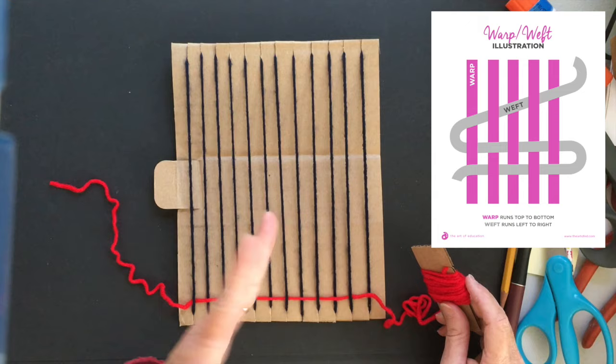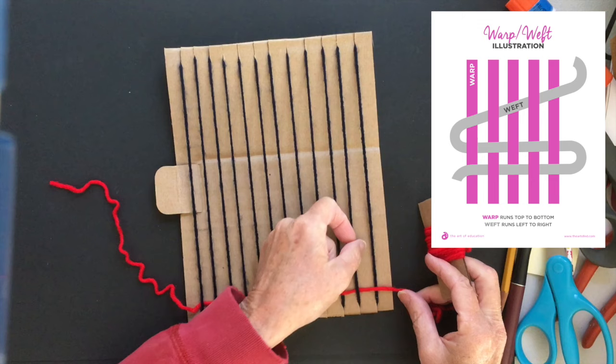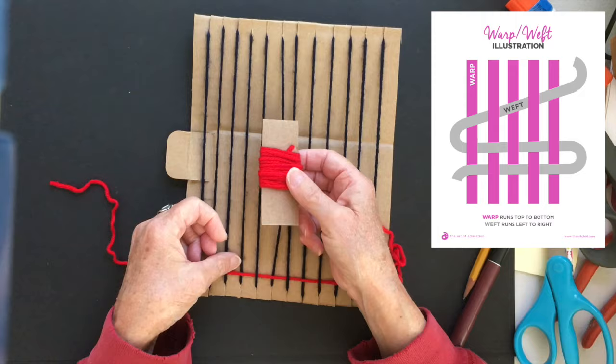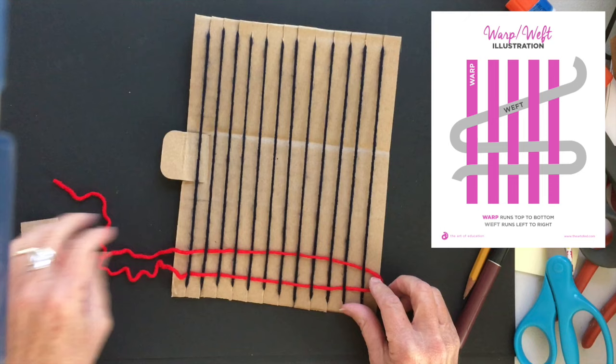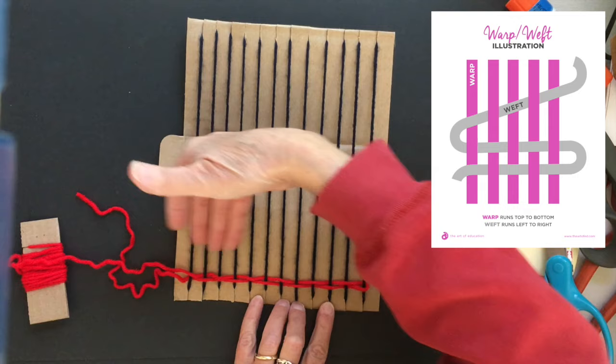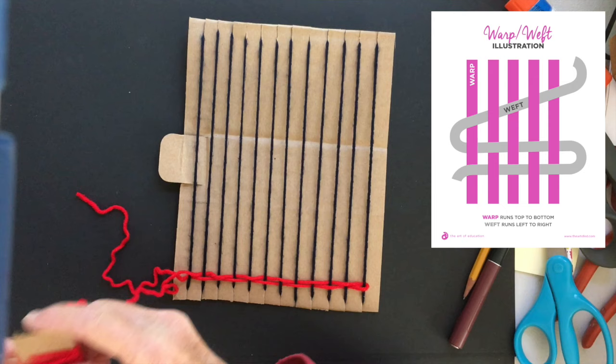So now I'm going to turn and go back the other way and this time an easy way to remember what you're doing is if I see my yarn went on top then I want to go underneath. When I pull I want to leave it kind of loose over on the right hand side and then I'll stuff it down with my fingers. And I've made two rows now.